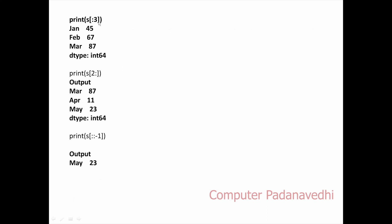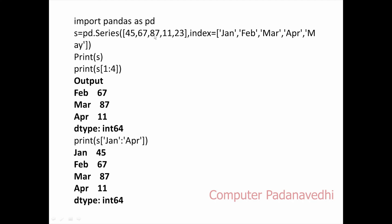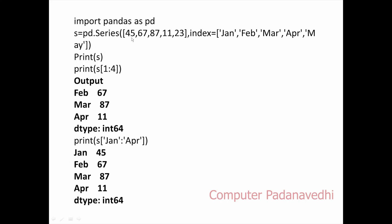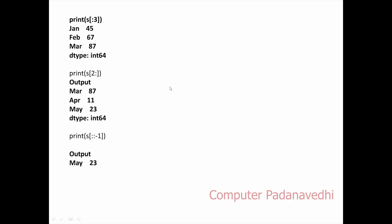Using slicing with colon notation: 0 colon 3 gives the starting 3 elements. Next, 2 colon 3 colon 2 gives full elements 0, 1, 2. Full elements, 3 colon 2 colon — demonstrating various slicing combinations.